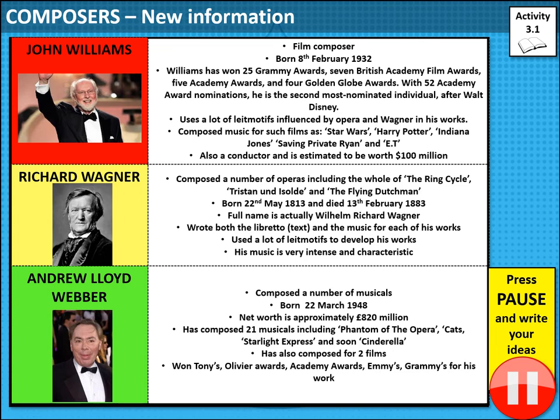Richard Wagner is somebody who influenced John Williams. He composed a number of operas including the Ring Cycle, which includes Die Walküre, Tristan und Isolde, and The Flying Dutchman. He was born in May 1813 and unfortunately died on 13th February 1883. His full name was actually Wilhelm Richard Wagner. He wrote both the libretto — the text — and the music for each of his works. He used leitmotifs to develop his works because they were very long operas, and the leitmotifs allowed you to identify who was coming onto stage or who was being spoken about from the music.